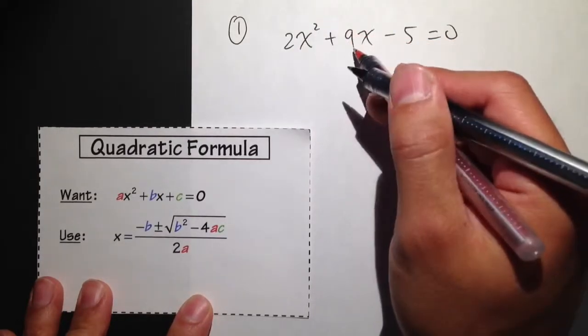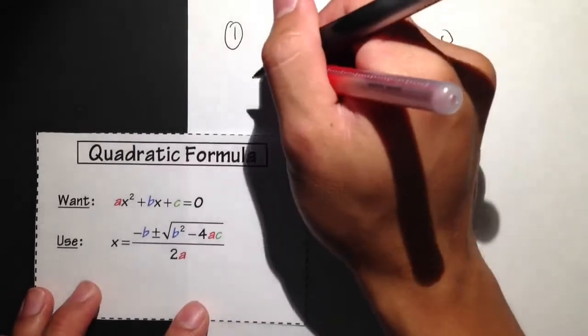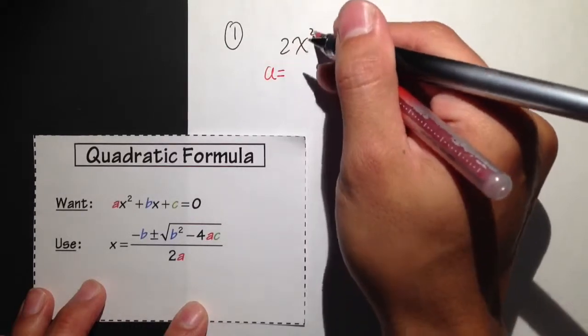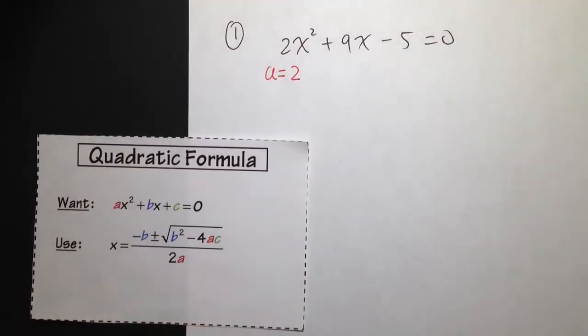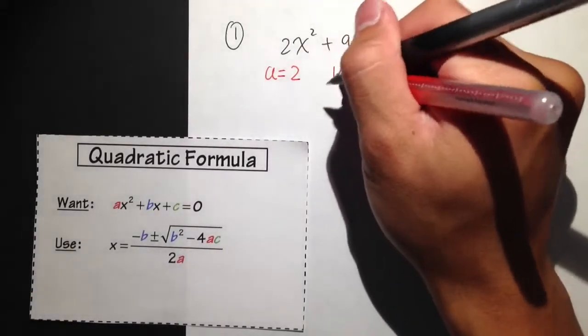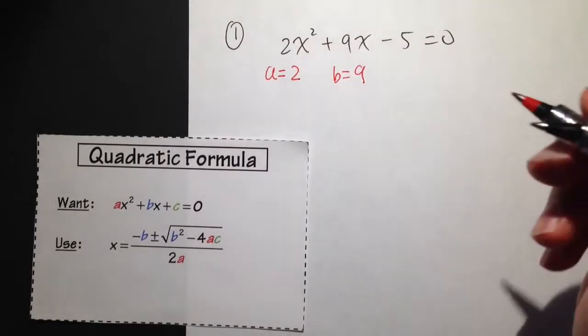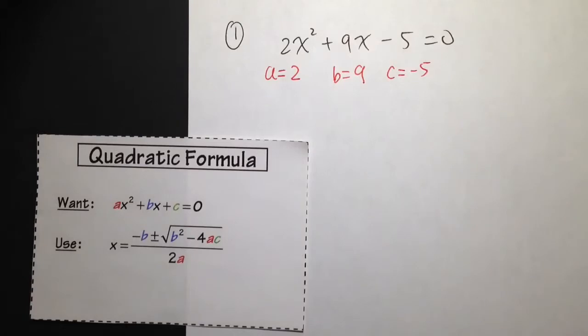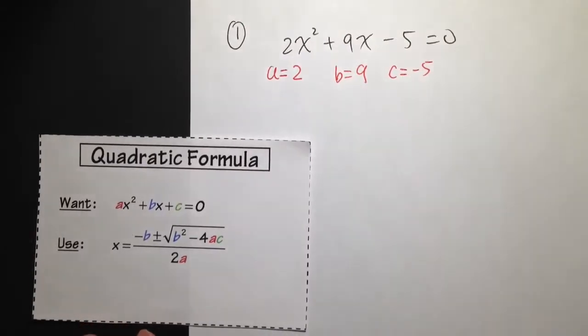ax squared plus bx plus c is equal to 0. Then, the next step is to identify a, which is the number in front of the x squared, which is 2. a is equal to 2. And then b, it's the number in front of the x, in our case, which is the 9. c, it's the number that has no x, that's negative 5. So, a is 2, b is 9, and c is negative 5.